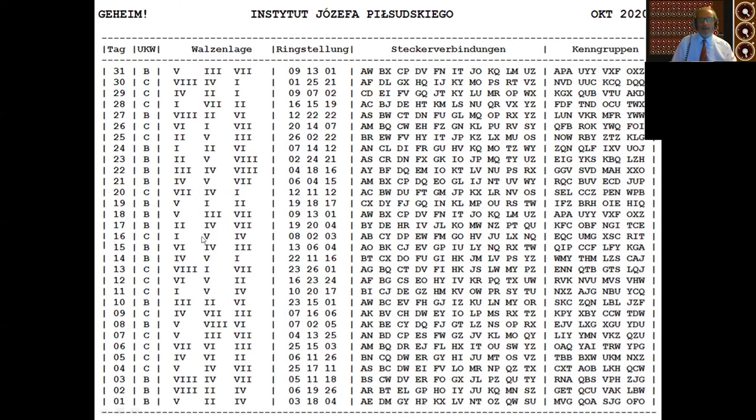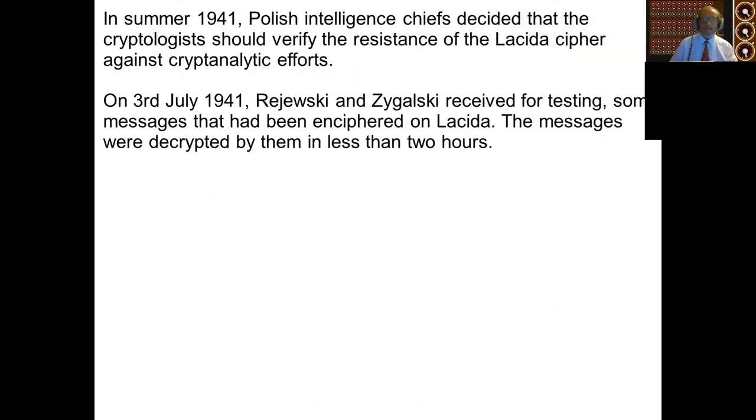But first of all, if we just look at this coding sheet, there's no reflector, so this column doesn't apply. The Walzenlage or the rotor order is fixed, so this column doesn't apply. The wheels have no rings, so this column doesn't apply. And there are no plugs, no plug boards. So this Steckerverbindungen column also does not apply. So in fact, the machine is the only thing you can set are the start positions of three of the wheels for a given day, and that's it.